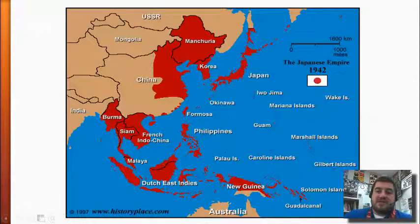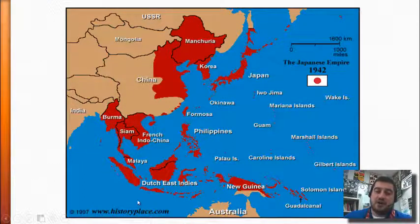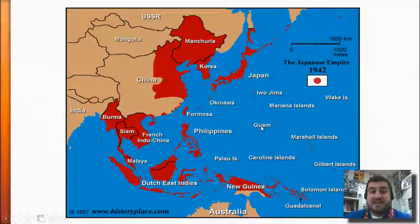Here you can see where Japan has taken over in 1942: all these islands, Burma, French Indochina (which is Vietnam), Siam, the Dutch East Indies, New Guinea — Japan takes over all this area.